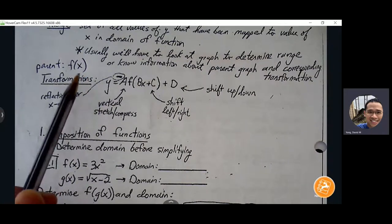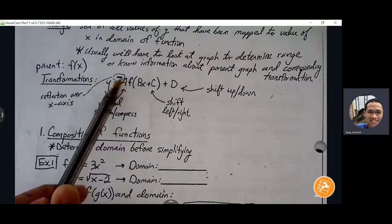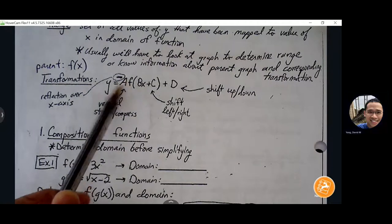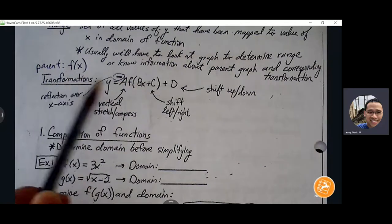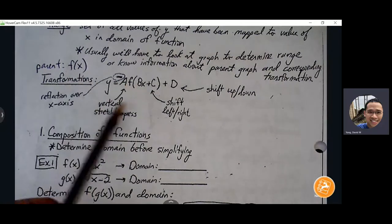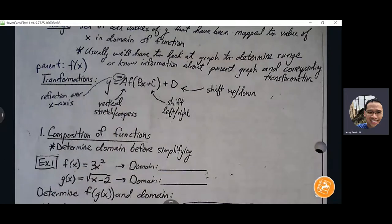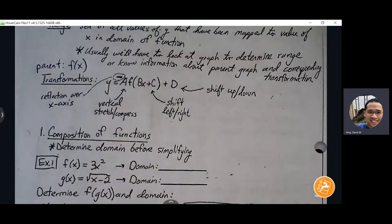If you see a number in front of the f(x) — could be 2, could be 3, could be one-third — that's going to take the function and either stretch it vertically or compress it vertically.